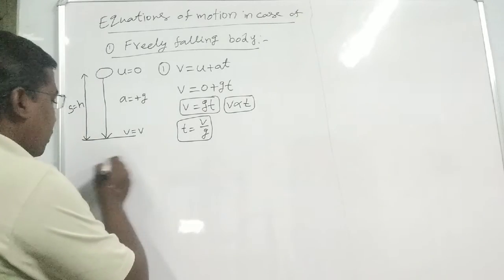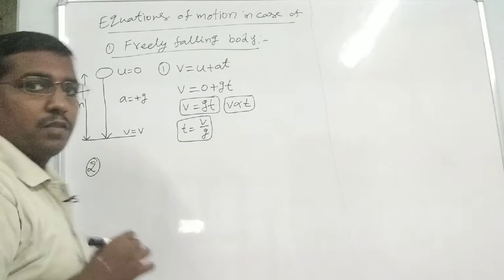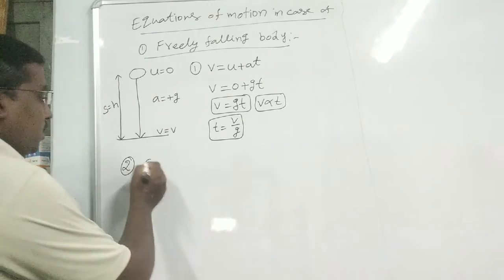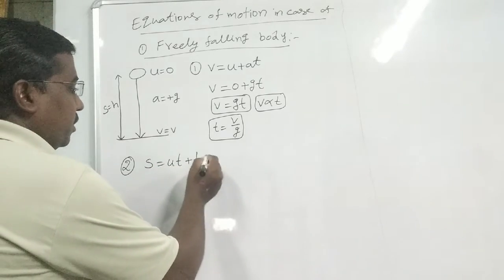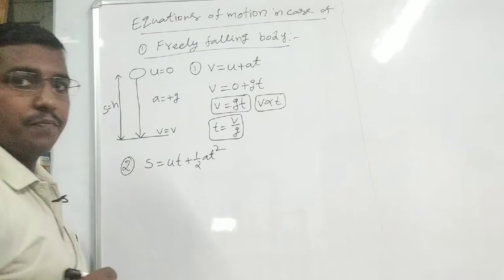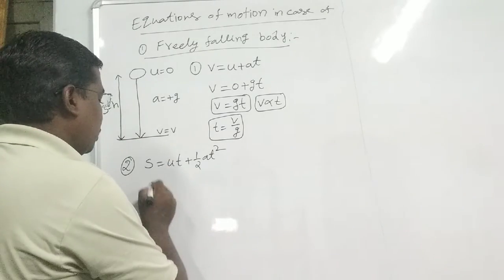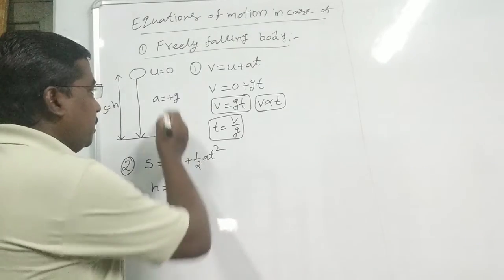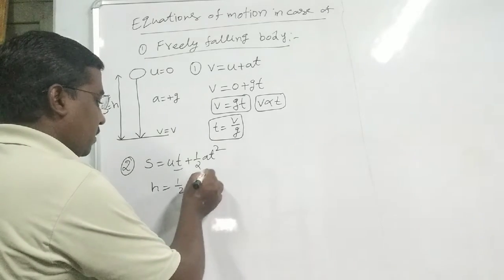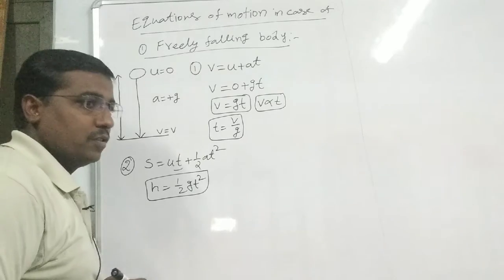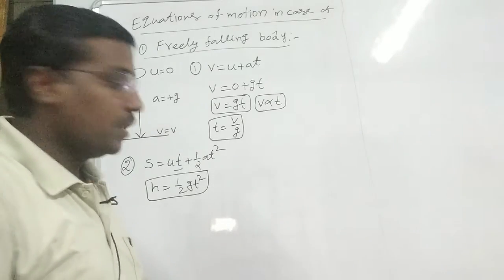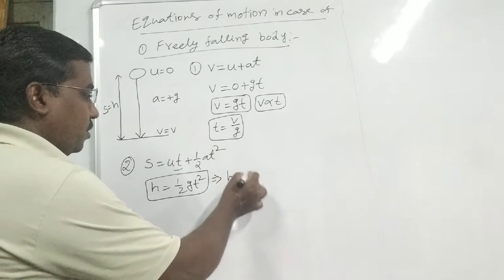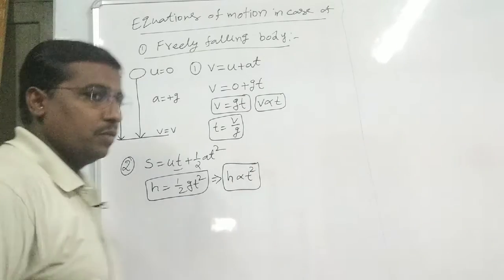For the second equation of motion, S = UT + ½aT². Substituting S = H and U = 0, the first term becomes zero, giving H = ½gT². By using this formula we find height, and we also note that H is proportional to T².